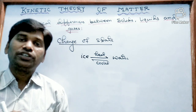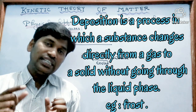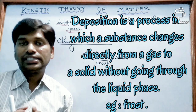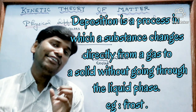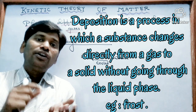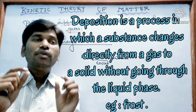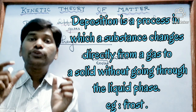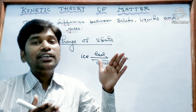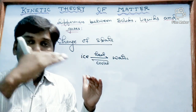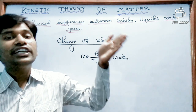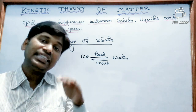Deposition is a process in which a gaseous state directly changes to the solid state. For example, in very cold weather, if you observe the leaves of plants, you will find some ice crystals — that is called frost. Frost is an example of deposition, where water vapor converted from gaseous state directly into ice.